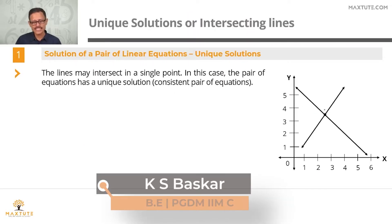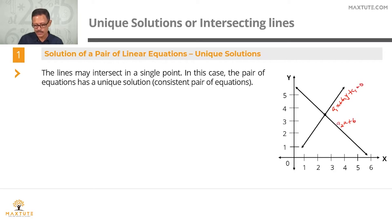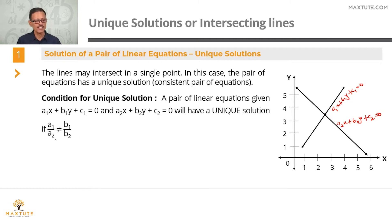If you have two straight lines, they could intersect at one point as shown in the graph. When they intersect at a single point, the pair of linear equations has a unique solution. The equation of the first line is a1x plus b1y plus c1 equals 0, and the second is a2x plus b2y plus c2 equals 0. The condition for a unique solution is that a1 by a2 should not be equal to b1 by b2.